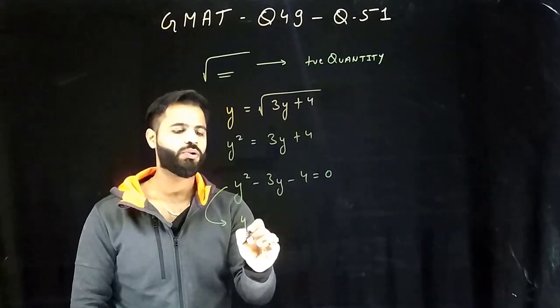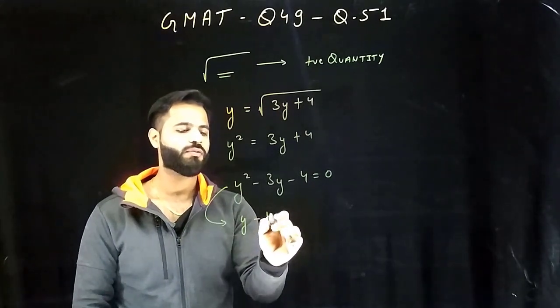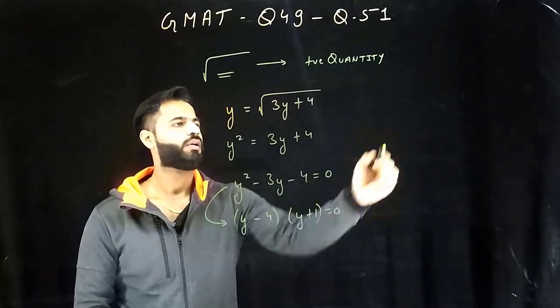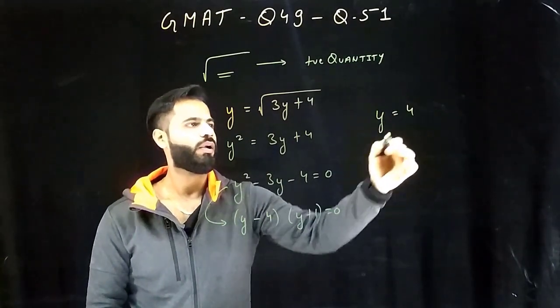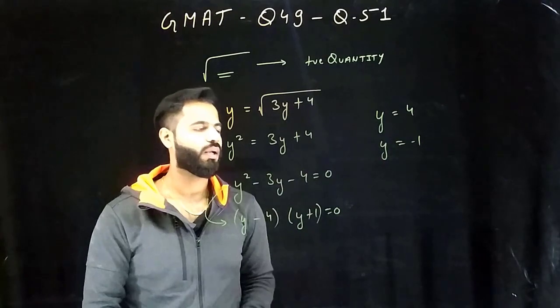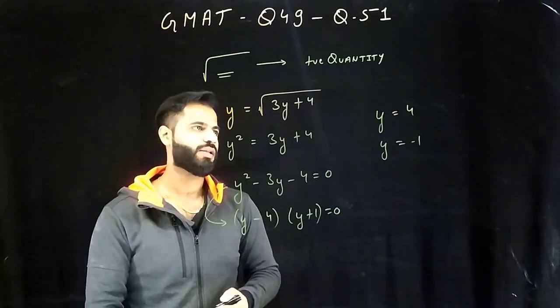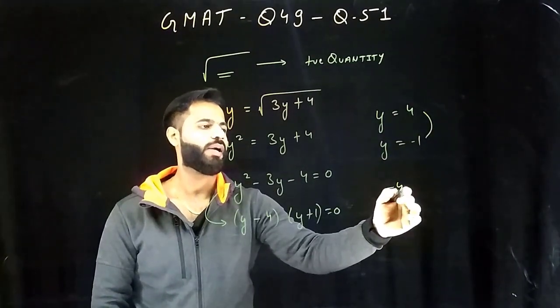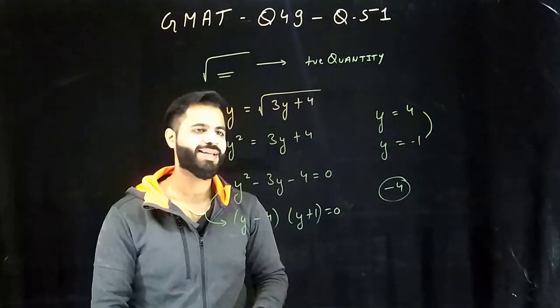Once you are over here it's quite easy to factorize it. Applying splitting the middle term, I reach to this point: y minus 4 and y plus 1 equals to zero, which gives me two things: y equals to 4 and y equals to minus 1.